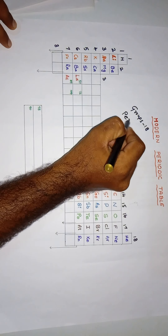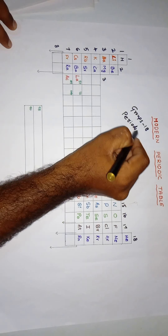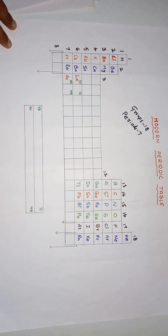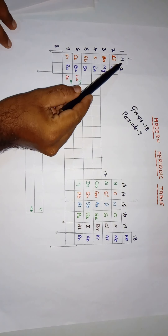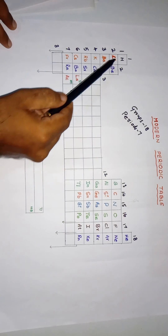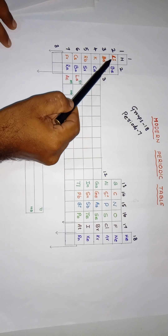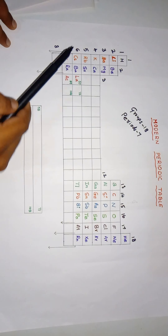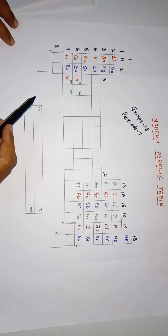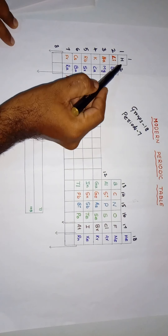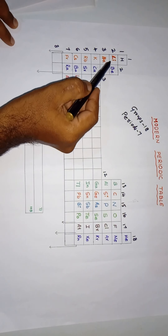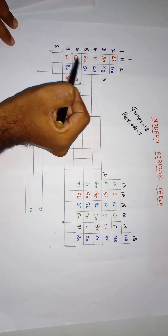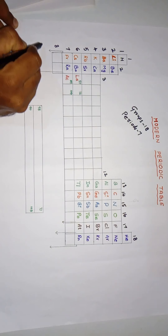In the modern periodic table we have seven periods and eighteen groups. In group one, the first group elements are hydrogen, lithium, sodium, potassium, rubidium, cesium, and francium. Except for hydrogen, the remaining elements are shown in orange color and are all called alkali metals.